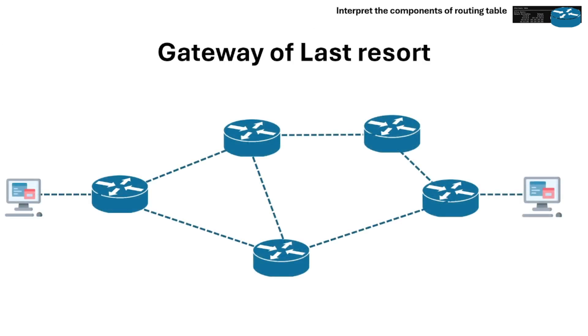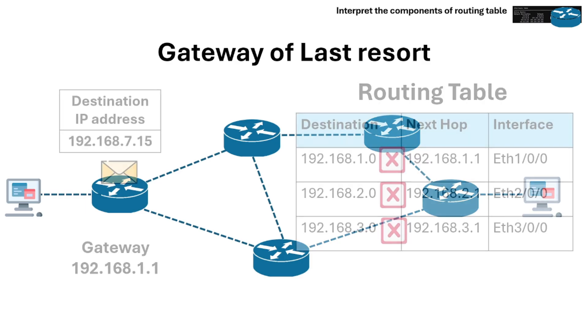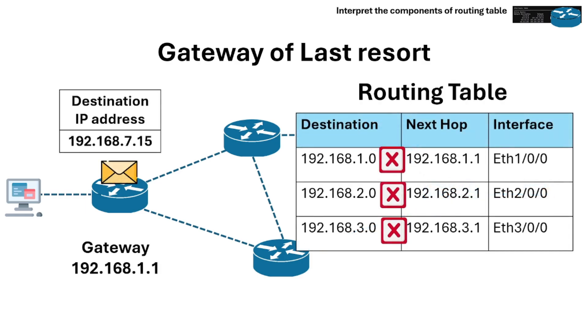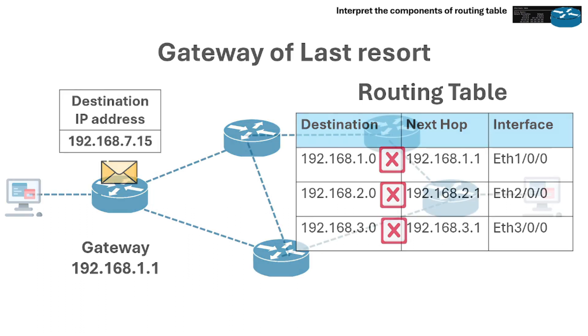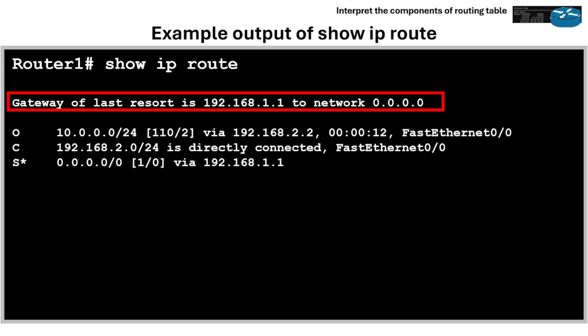Next is the gateway of last resort. This is the default route used when no other specific route matches the destination. In this routing table example, the gateway of last resort is 192.168.1.1 — meaning if the router doesn't know where a packet should go, it sends it to 192.168.1.1. The route to 0.0.0.0/0 is used when no other specific route matches.